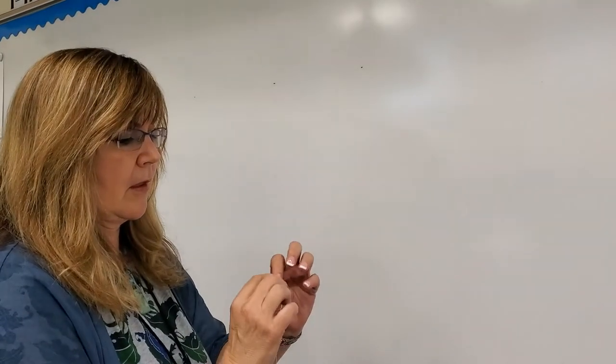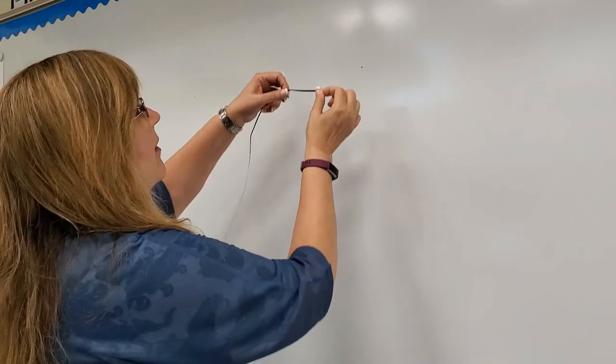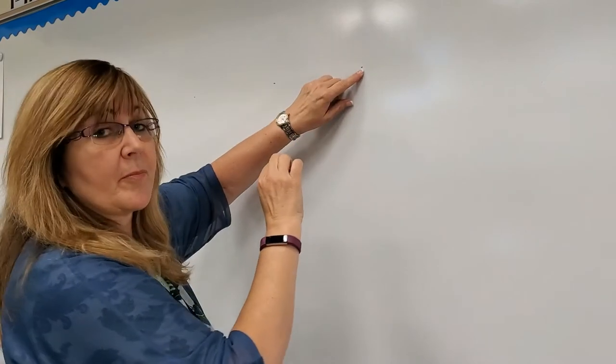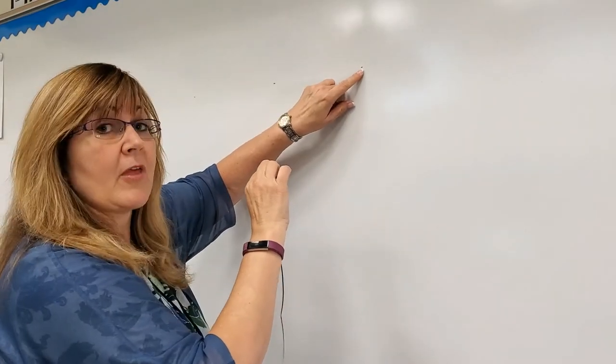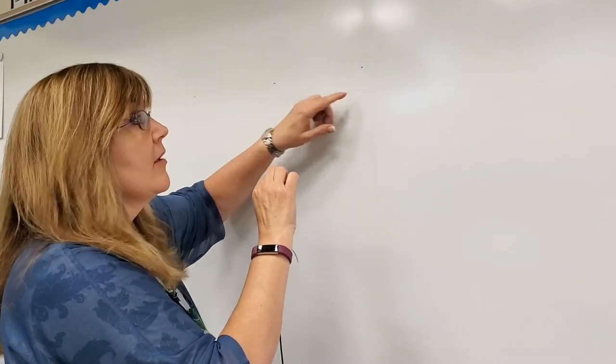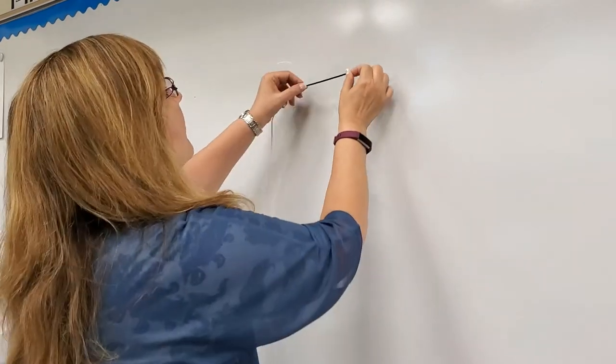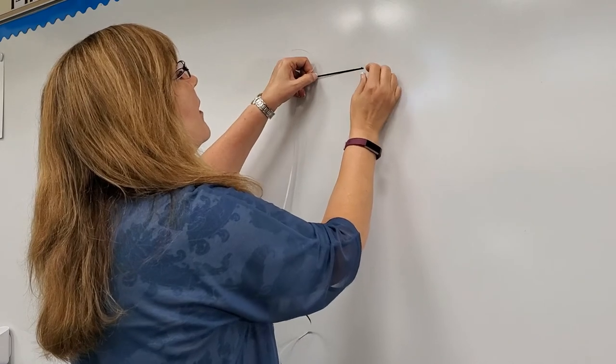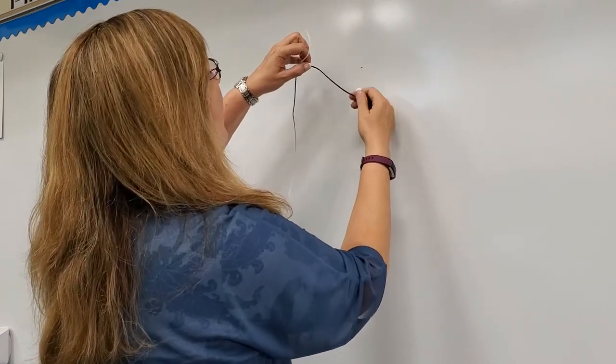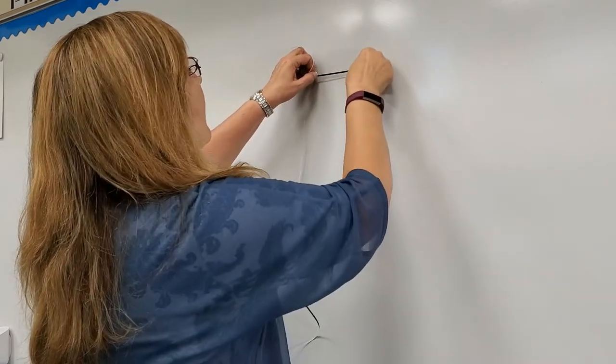So what I do is I take my tape, and the trickiest part is laying that first end straight. Now you can choose to go on top of the lines, but if you do that and you pull it up to readjust it, your line disappears. So I'm going to do mine just below it. I'm going to put this right under it, and again I want it straight.